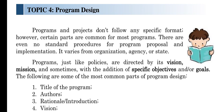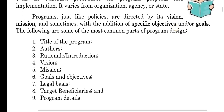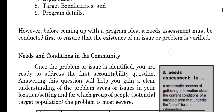Programs, just like policies, are directed by their vision, mission, and sometimes with the addition of specific objectives and goals. The following are some of the most common parts of program design: the vision and mission, the goals and objectives. These are the most common parts and elements of an organization, policy, program, and project. The formulators or agencies also put the vision and mission to guide the implementation of a program in a certain direction. The most common parts are: number one, the title of the program; number two, the authors; the rationale; introduction; vision, mission, goals and objectives; legal basis; target beneficiaries; and the program details.